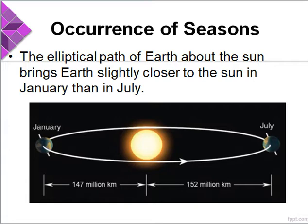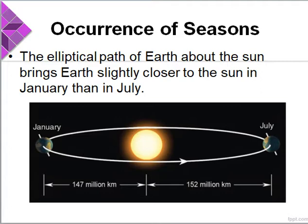As Earth revolves around the Sun, it spins on its axis, completing one spin in 24 hours — that is one day. Earth comes closer to the Sun in January, about 147 million kilometers, and farther in July, about 152 million kilometers.